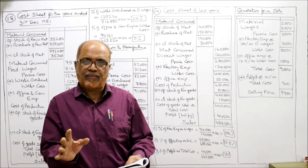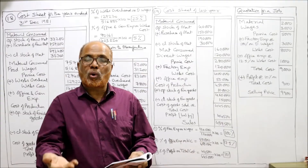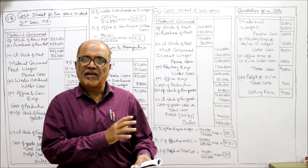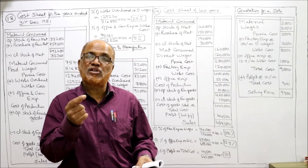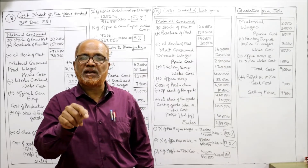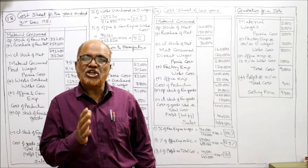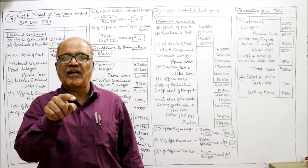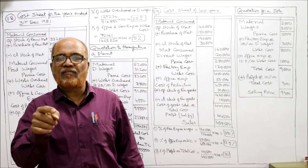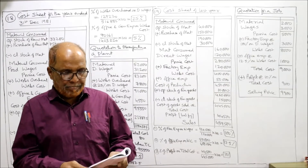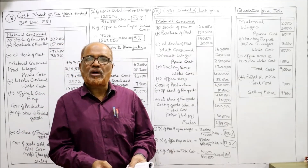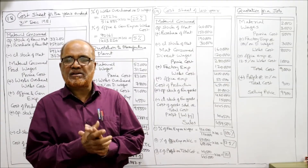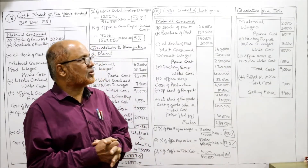This is the complete data. Next: what should be the quotation? First we have to make the statement of cost of last year and calculate the percentages — percentage of factory overhead on direct wages, percentage of administration overhead on works cost. Now, what should be the quotation for a job requiring 2,000 in material and 3,000 in direct wages? Nothing is given regarding overheads.